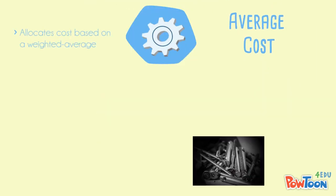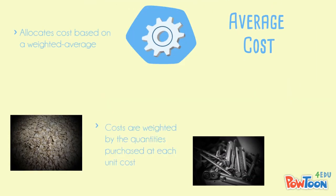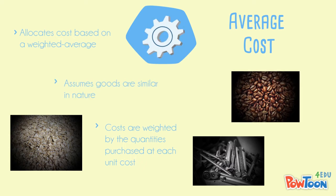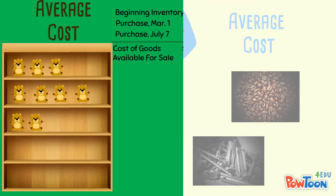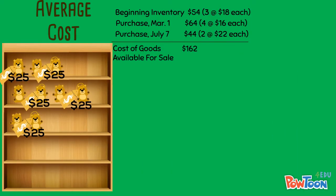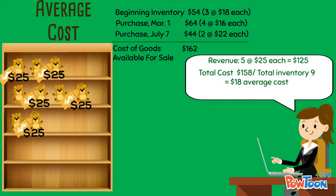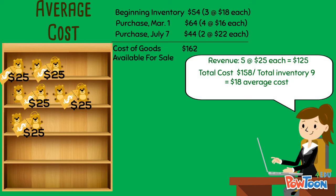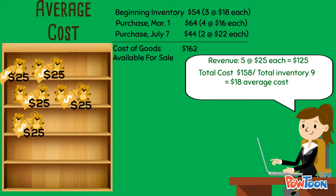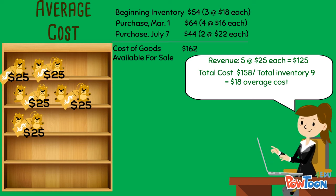The average cost method uses a weighted average to determine the amount that is allocated to cost of goods sold. This method usually assumes that goods are similar in nature. Again, we can go back to our store and sell the same five bears for $25 each. We can then calculate that our weighted average wholesale price for the nine bears we purchased during the year was $18, so when we sell five bears, the cost of goods sold is recorded at $90.